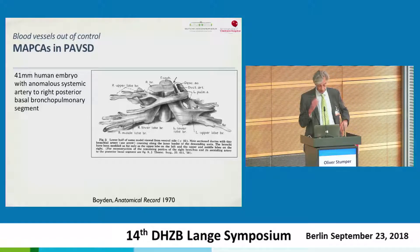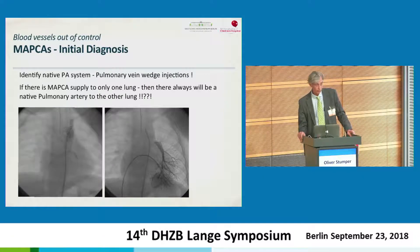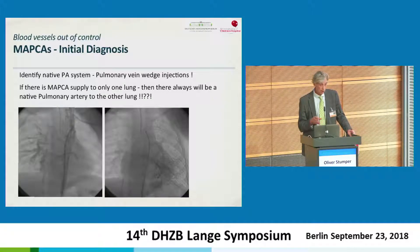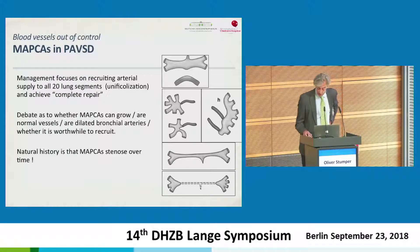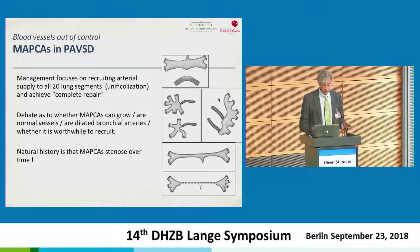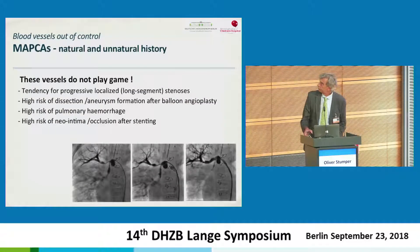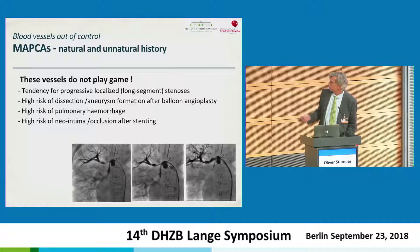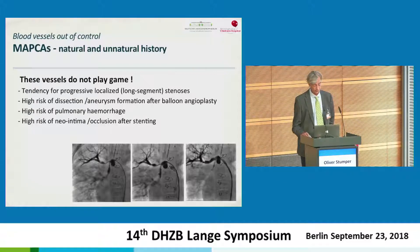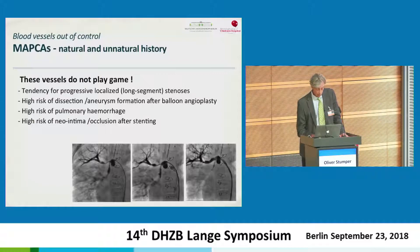Bronchial arteries developed really from the ductus, whereas segmental arteries are already present. In classical examples — where there are only MAPCAs to one lung — you will always find a native pulmonary artery to the other lung. In Birmingham we try to recruit as many segmental pulmonary arteries as possible, since the central pulmonary arteries are pretty useless and you have to reconstruct from hilum to hilum. Central arteries, probably derived from bronchials, have a high tendency for progressive long-segment stenosis, high risk of dissection and aneurysm after balloon angioplasty, and high risk of pulmonary hemorrhage and neo-intimal occlusion after stenting.